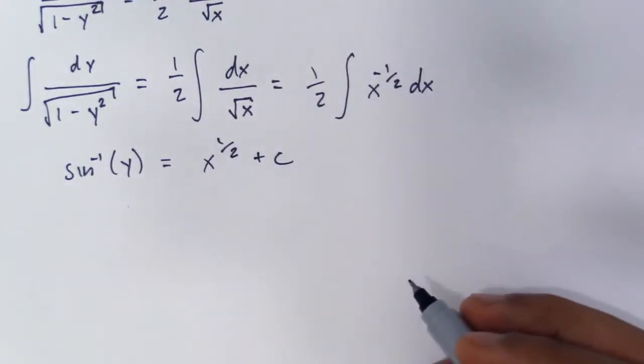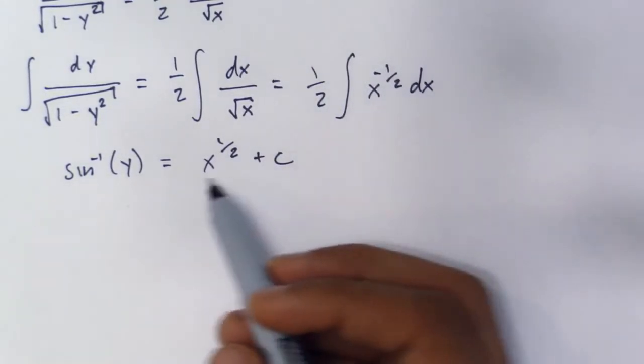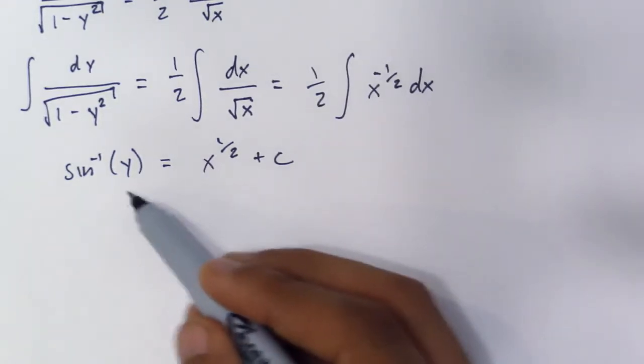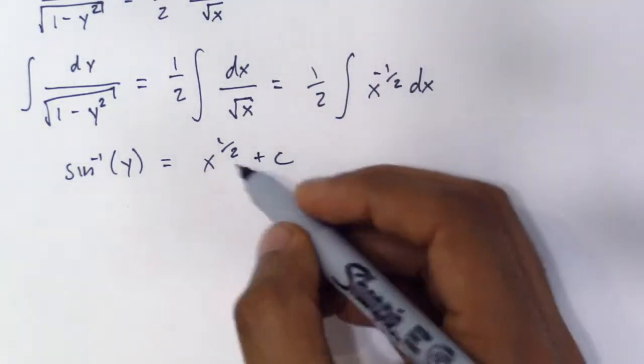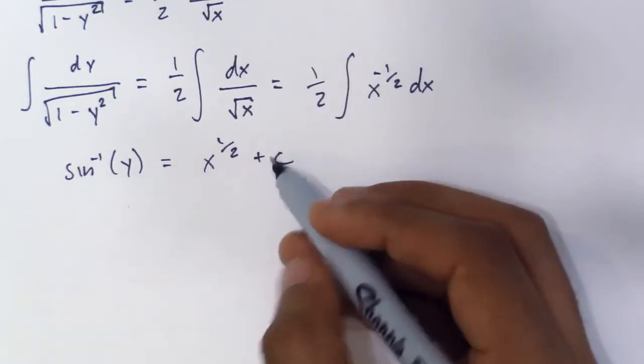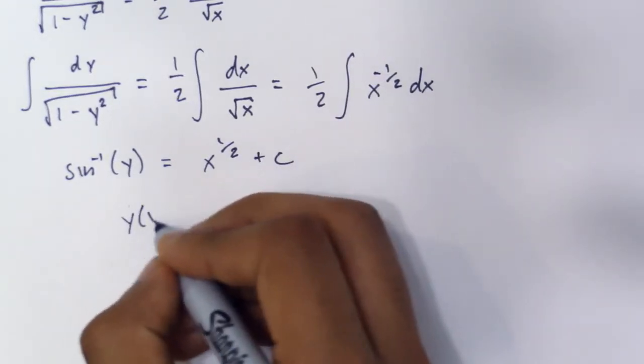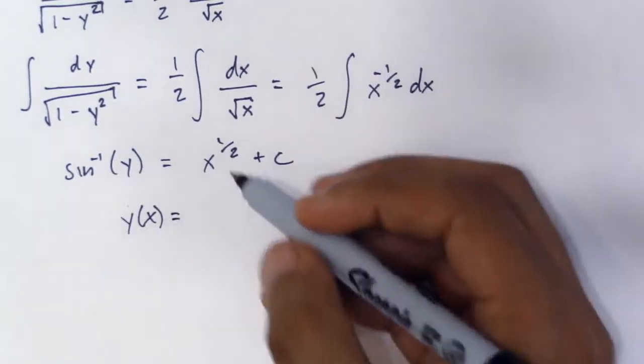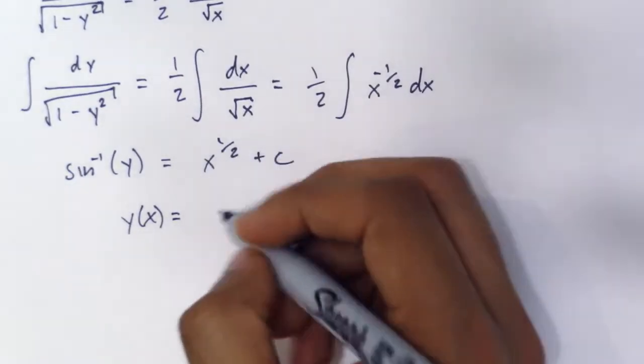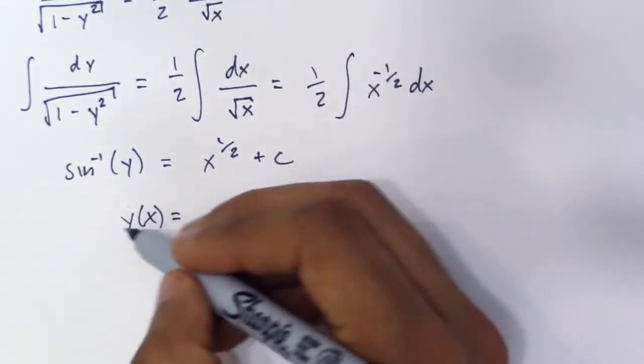Now you can stop here if you want to, but probably most teachers want you to solve for a function y of x. So what you have to do is move this sine over here such that you get y of x, a function of x that's strictly x on this side and strictly y on this side.